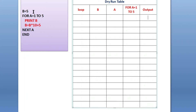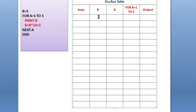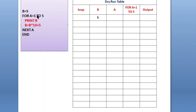Let's begin from the first line: b equals to 5. So in the 'b' column I'll write value 5. Then in the next line, for a equals to 1 to 5 — by looking at this line you can say this for loop will execute five times, starting from 1 up to 5.